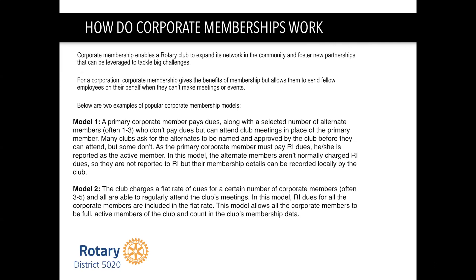The second model is where the club charges a fee or range of fees for a certain number of corporate members — anywhere from one to five. Typically, two to three members is where the corporation starts to see a discount in dues, and it allows corporate members to be full active members of the club. These models came out of the pilot project because corporation heads can't always make all Rotary Club meetings. If they had multiple members of their company in a club, they could rotate who was coming to meetings, and they'd get full credit for attendance as long as at least one member from the corporation attended each week.